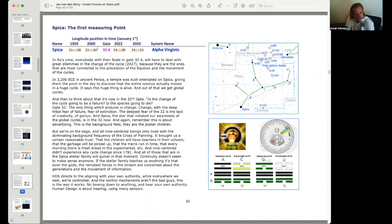Here we see 24 Libra, and then at 23 Libra, 72 years apart. Gate 32, line four—it entered into Gate 32, line four in the 2000s. So in Ra's view, everybody with their node in Gate 32, line four will have to deal with the great dilemmas and the change of the cycle 2027, because they are the ones most connected to the procession of the equinox and the movement of the cycles. In 3200 BCE in ancient Persia, a temple was built oriented on Spica.